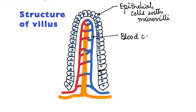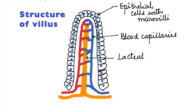Next, inside the villus, there is a network of blood capillaries placed close to the epithelial cells, so that whatever is absorbed passes directly into the blood capillaries.